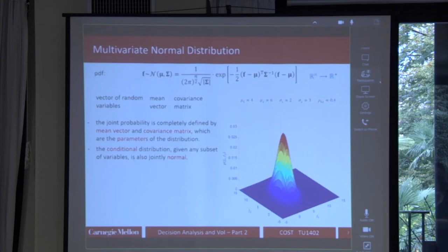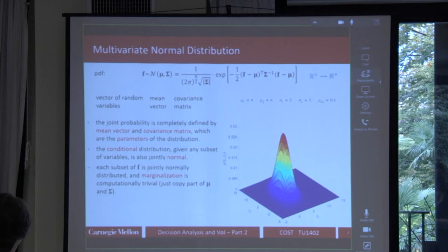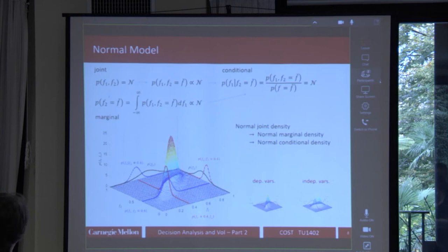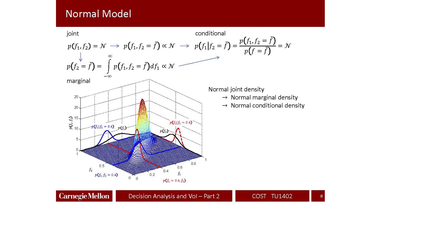The multivariate normal has very nice properties. The conditional distribution — no matter where you cut the joint distribution — is always normal. Marginalizing to focus on just one variable also yields a normal distribution. Any linear combination of the random variables is also normal. These properties make inference very simple. For example, in the bivariate case, the joint distribution is fully defined by the mean vector and covariance matrix, and the marginal P(F1) is just a normal distribution obtained by integration.